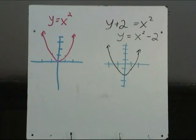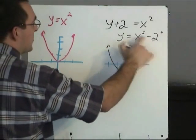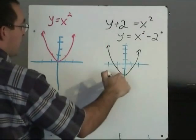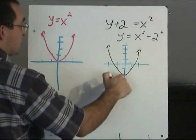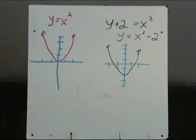And when we replace y with y plus 2, we have y plus 2 equals x squared — or in other words, y equals x squared minus 2 when you bring the 2 over to the other side. In this case, the graph has moved down 2. So replacing y with y plus 2 will move the graph down 2.